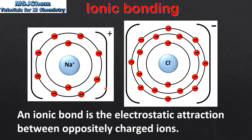So here we have two ions: on the left a positive sodium ion, on the right a negative chloride ion. The ionic bond is the electrostatic attraction between the positively charged sodium ion and the negatively charged chloride ion.